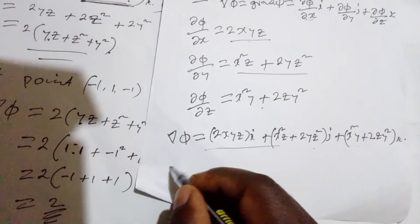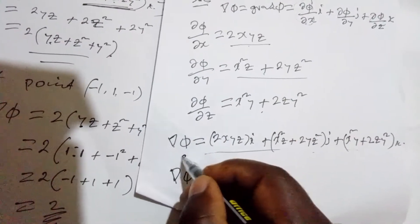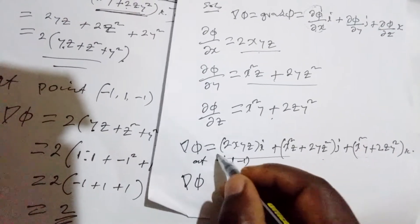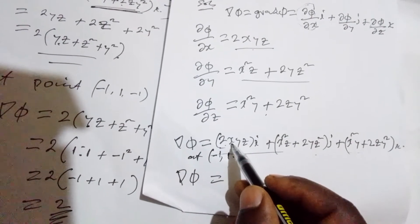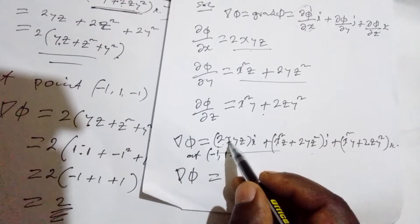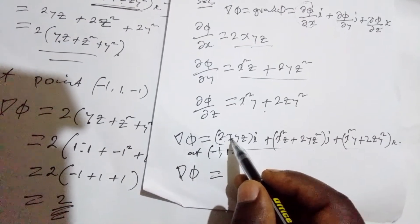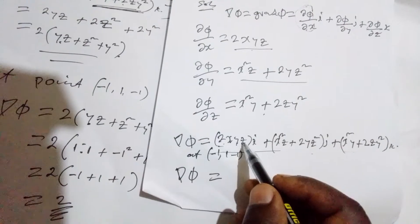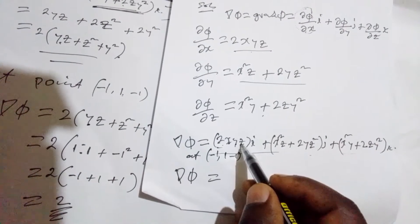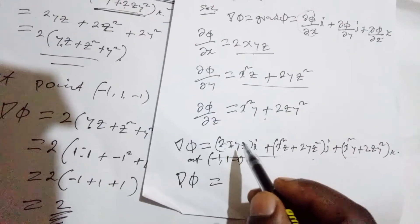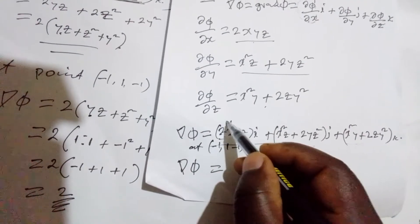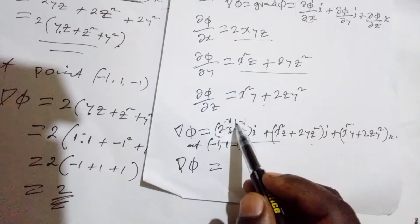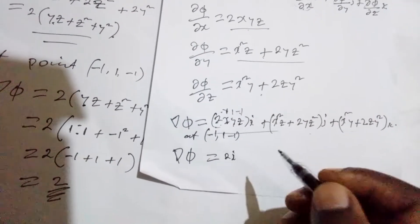Now for the gradient at point negative 1, positive 1, negative 1, we substitute into each component. For the i component, 2xyz: x is negative 1, y is 1, z is negative 1, so negative 2 times 1 times negative 1 gives positive 2. So we have 2i.